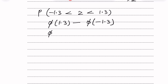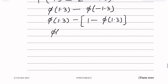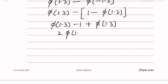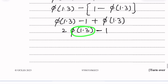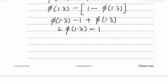So the expression becomes: Phi(1.3) minus [1 minus Phi(1.3)] = 2 × Phi(1.3) minus 1. From the normal distribution table, Phi(1.3) equals 0.9032. Therefore the probability equals 2 × 0.9032 minus 1 = 0.8064.